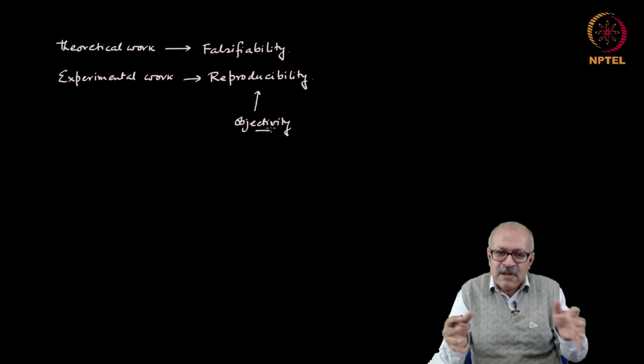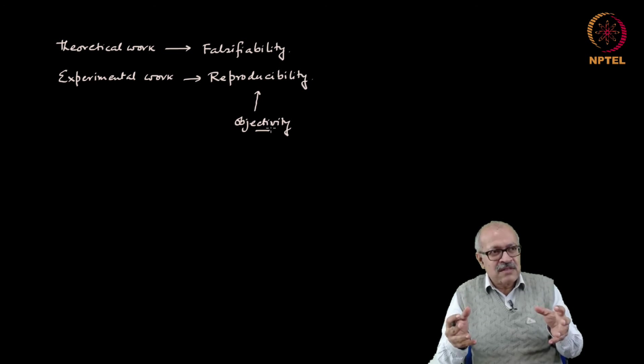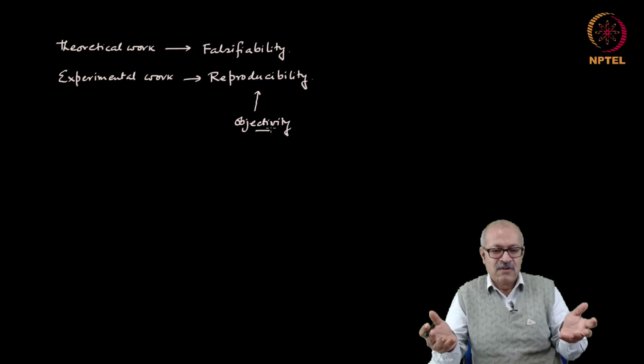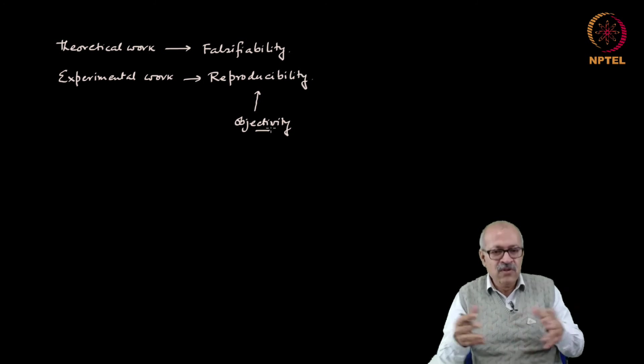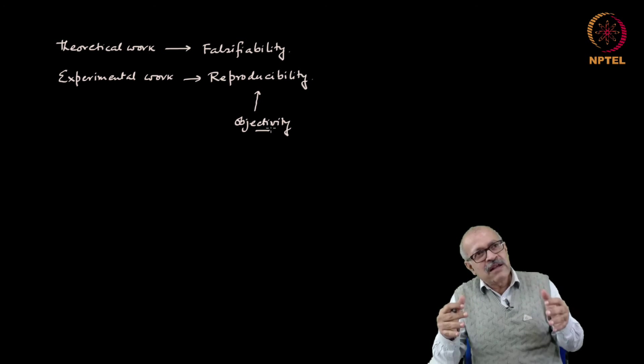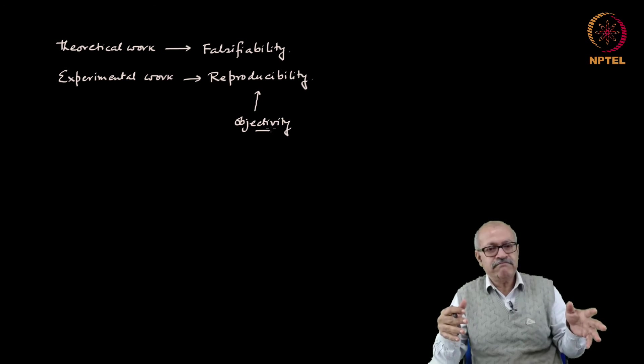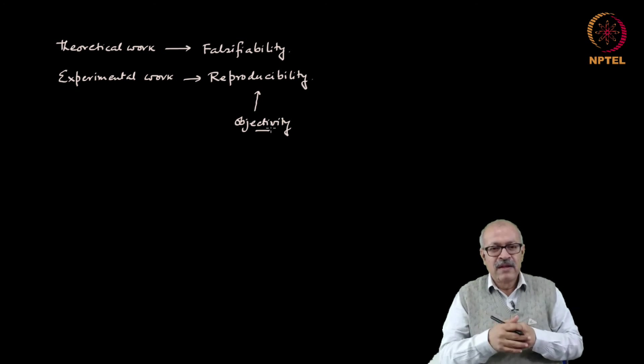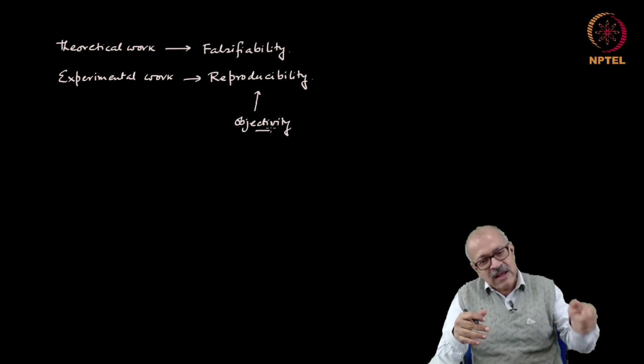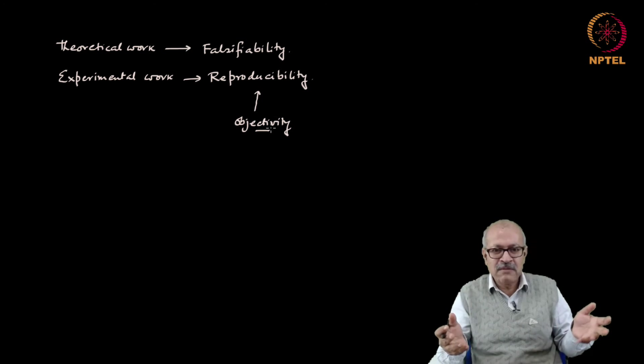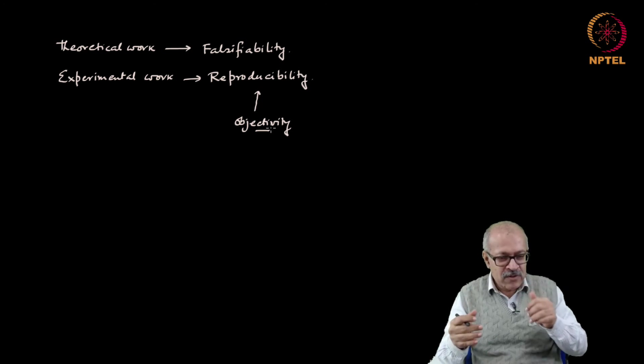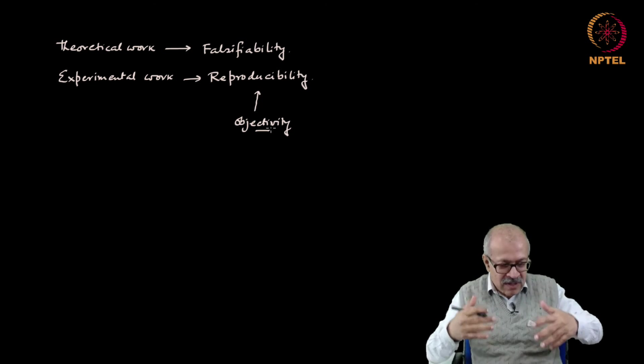Now, in an experiment we do not always just look at phenomena, we also measure numbers, measure values of quantities, values of constants, values of parameters we do measure. And suppose we measure something and get a value 3.94, we report it. Will somebody somewhere else in the world doing the same experiment get the same number 3.94? No, it might be slightly different. So how can you ensure that your result is reproducible?